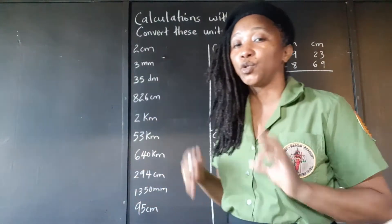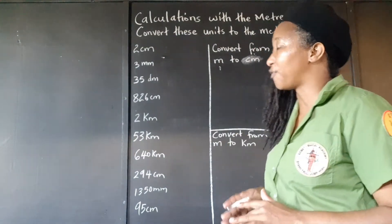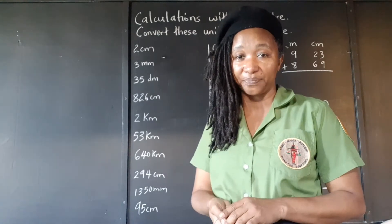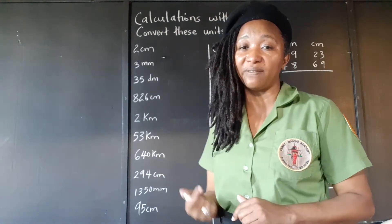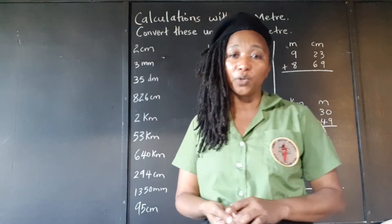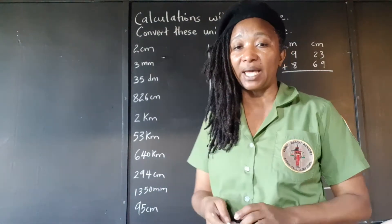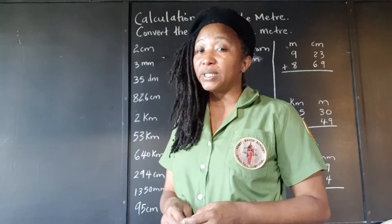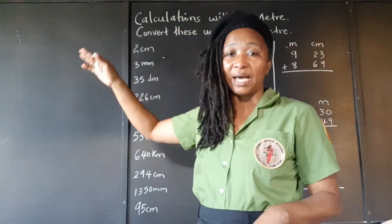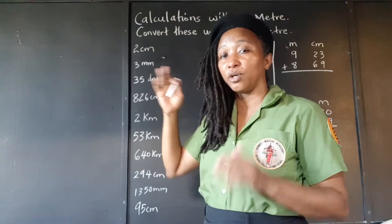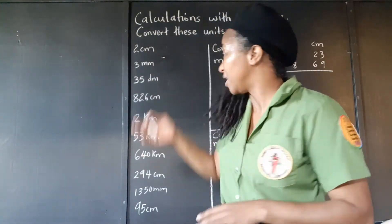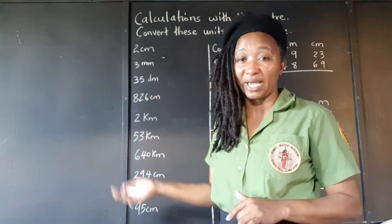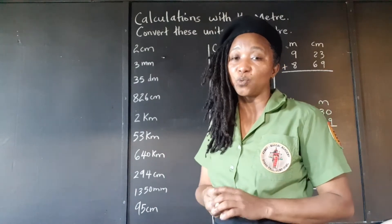Remember two important points. When we're changing from the smaller unit to the bigger unit, we're going to divide. Bigger unit to smaller unit, we multiply. What decides what power we divide or multiply by? You can use the prefix attached to the meter — the small word in front of meter. So 'centi', for example, tells you one hundred.